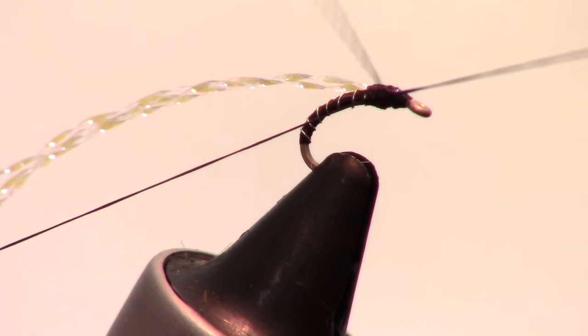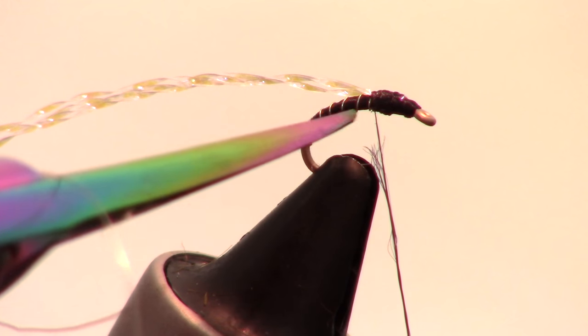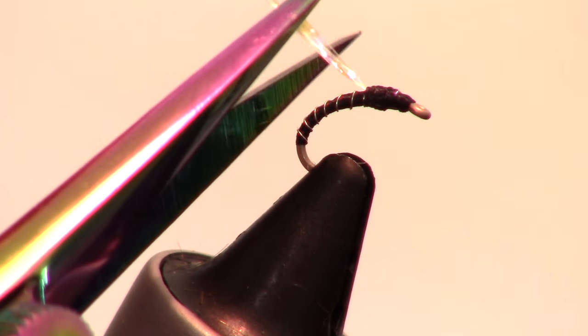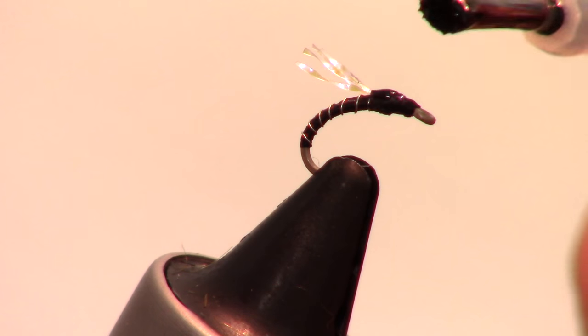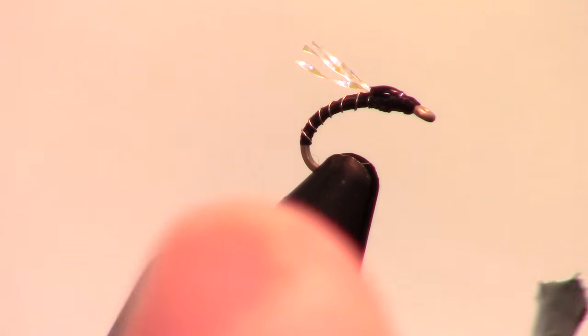Whip finish your fly and cut off the thread close. Then cut the Crystal Flash to about where the hook ends. As you can see it extends as long as the hook. Finally add some head cement to keep everything in place.